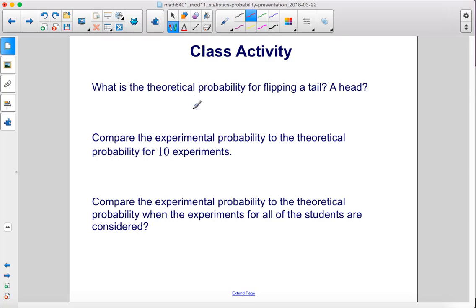What is the theoretical probability for flipping a tail or a head? Well, the theoretical probability is 1 over 2, because we have one favorable outcome and we have two possible outcomes, heads and tails.